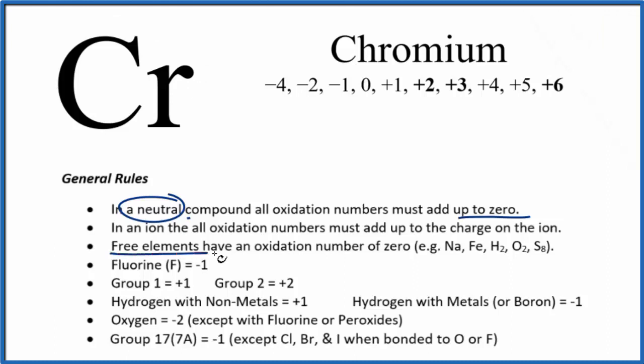We call this a free element. Oxidation number is zero, like Na or Fe or even H2, O2, or S8. All the same element, that's a free element, oxidation number is zero. So we could say for chromium, just Cr, that would be zero.